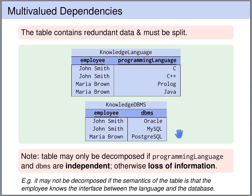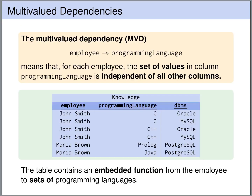However, observe that this split is only lossless if the programming language and the database management system are independent of each other. So whether this split is lossless really depends on the semantics of the table. If the semantics is that we store for every employee whether they know the interface of the database management system in a particular programming language, then these two columns are correlated and we cannot split the tables. The split is only lossless if these two columns are truly independent of each other. This leads to the concept of multivalued dependencies.